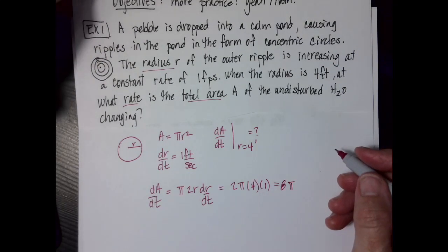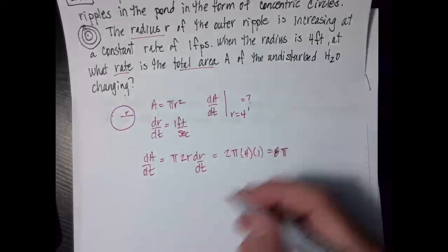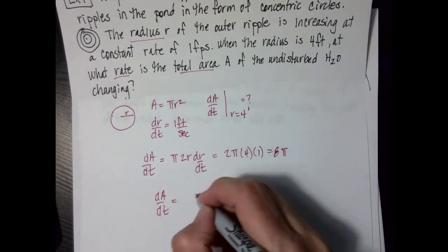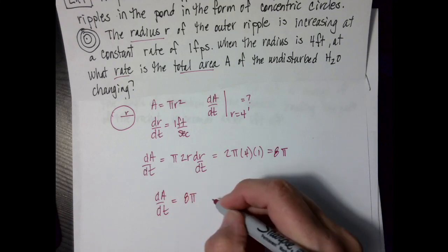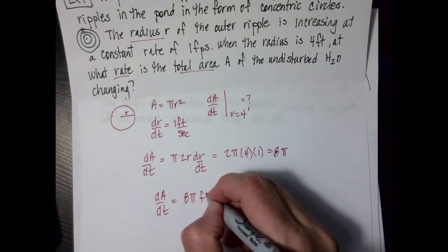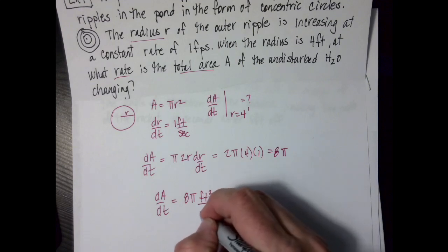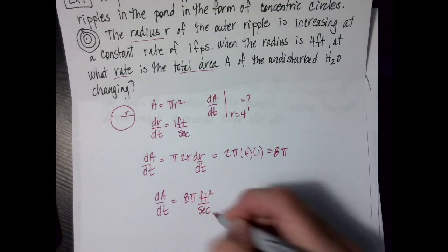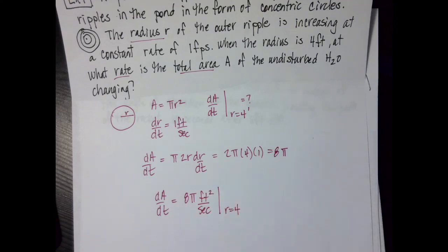That one was nice and easy. Sometimes you get lucky, and they're very straightforward. So da over dt is equal to 8 pi. My unit's area is square, so it's going to be square feet per unit of time, which in this one was per second. And we evaluated it when my radius was 4.